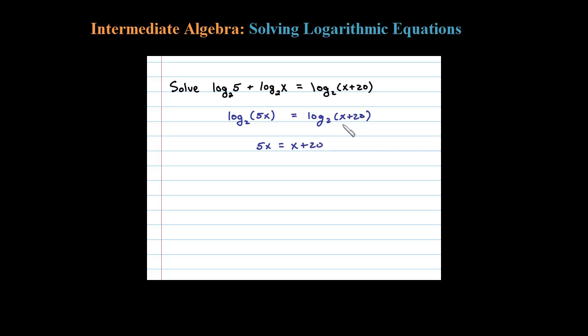Then just solve like normal. Here we would subtract an x, leaving us with 4x equals 20, and then dividing both sides by 4, we have our answer: x equals 5.